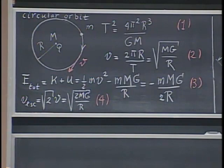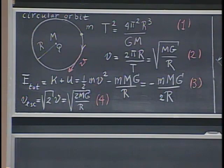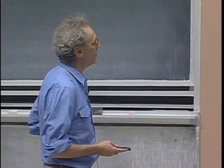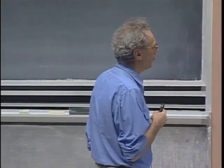If the total energy is positive, the orbit is not bound. The escape velocity is found by setting total energy to zero — out pops the speed with which you can escape the gravitational pull of capital M, which is square root of two times larger than the orbital speed v. For near-Earth orbits, the period is about 90 minutes, the orbital speed is about 8 km/s, and the escape velocity is about 11.2 km/s.